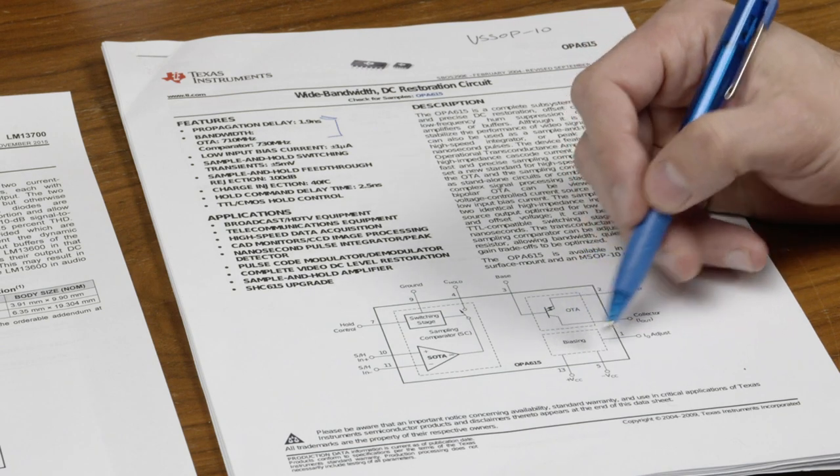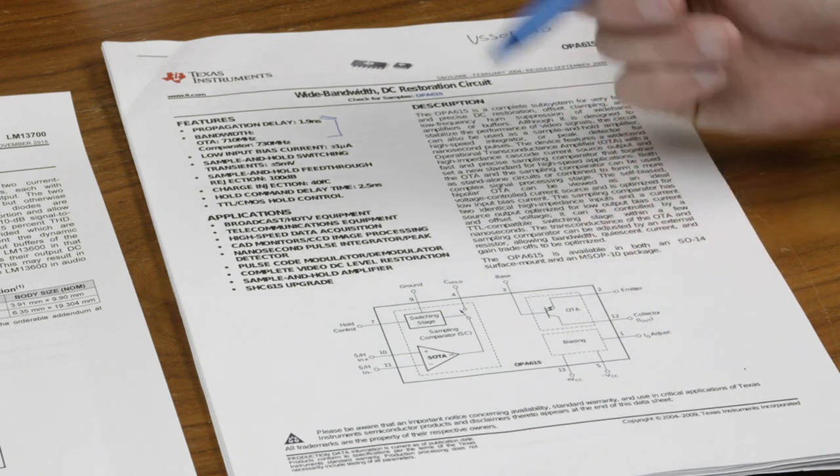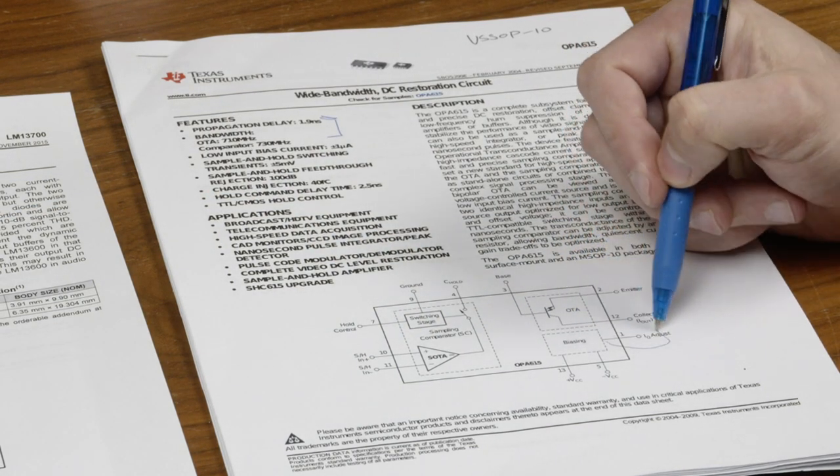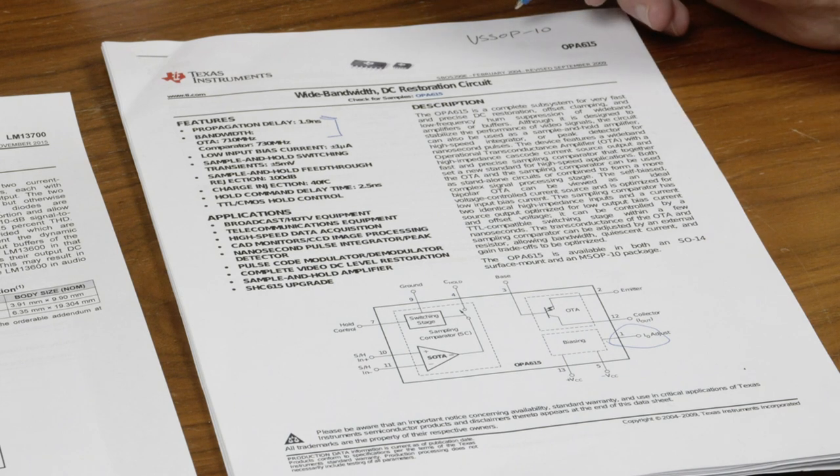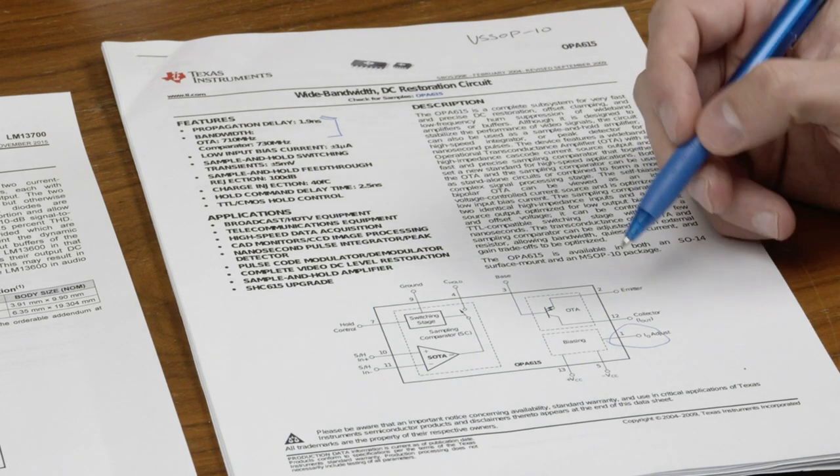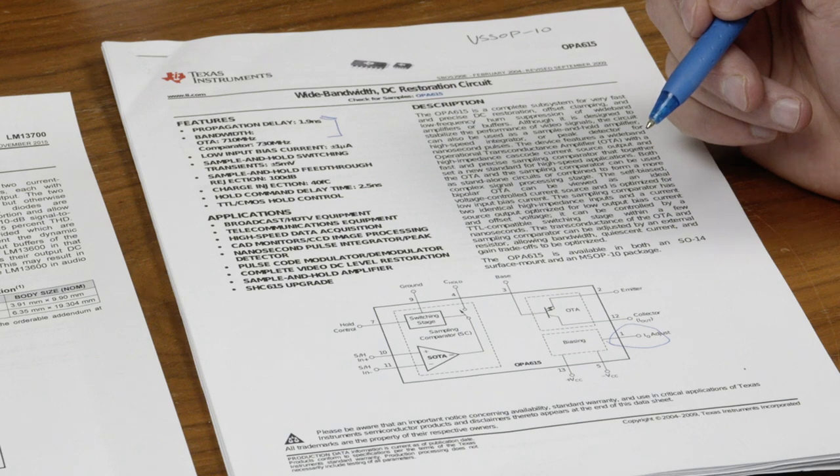There is also a biasing circuit, which has this IQ adjust, which is similar to the bias current just there. In fact, this pin here is not present in the VSOP package, which is the package I happen to have. So I don't actually use that pin, because I don't have it in my package.